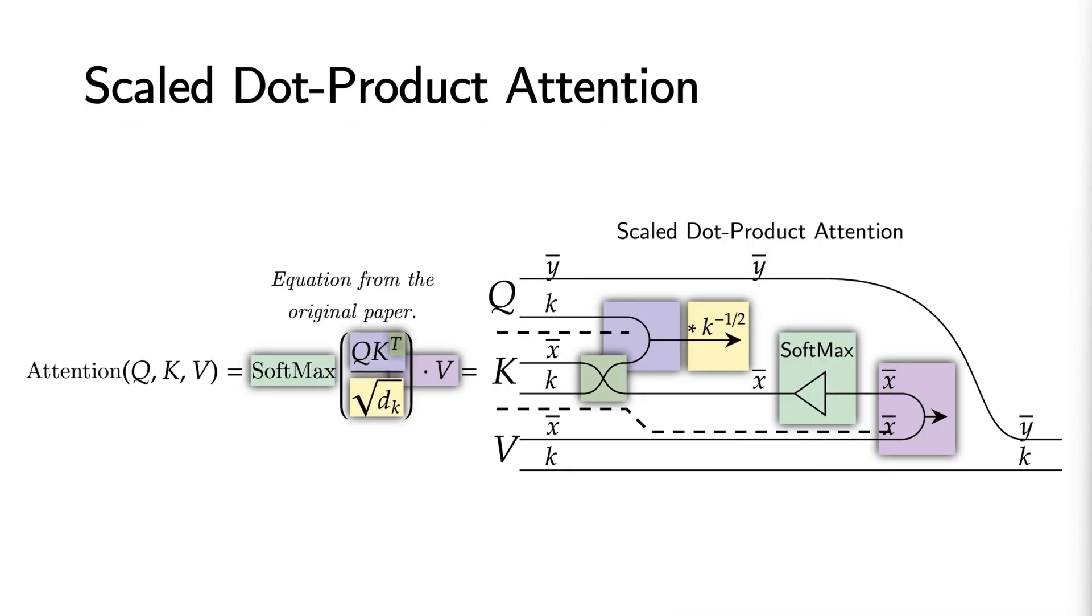We can now address scaled dot product attention using neural circuit diagrams. Here, we have all the components of attention expressed using neural circuit diagrams, making the axes on which operations occur explicit.